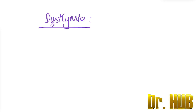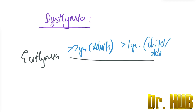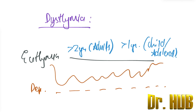Next we have dysthymia. In dysthymia, there is a presence of euthymia with a duration greater than two years in adults and greater than one year in children and adolescents. There will be fluctuations in mood, but it is prolonged — there is a continuous presence of low mood that does not necessarily cross the full threshold for depression.